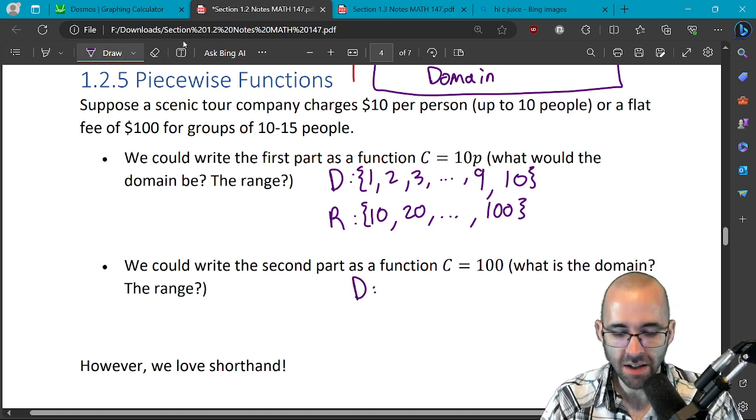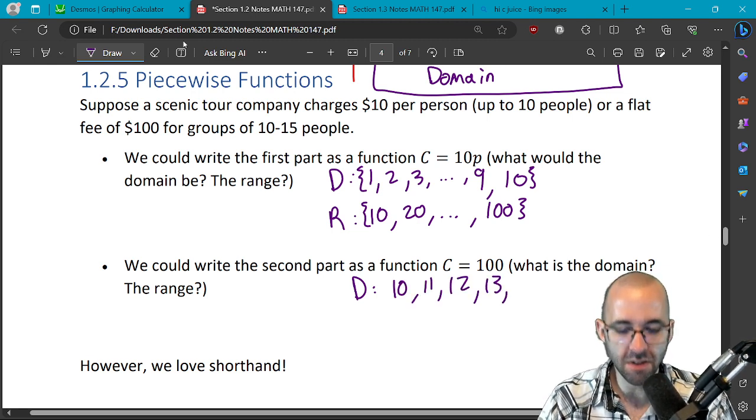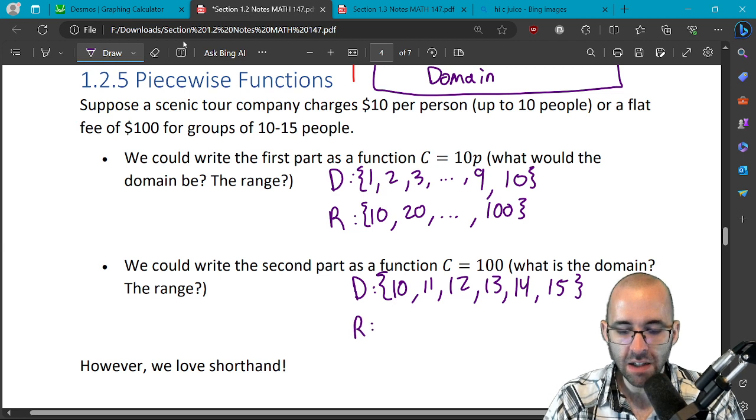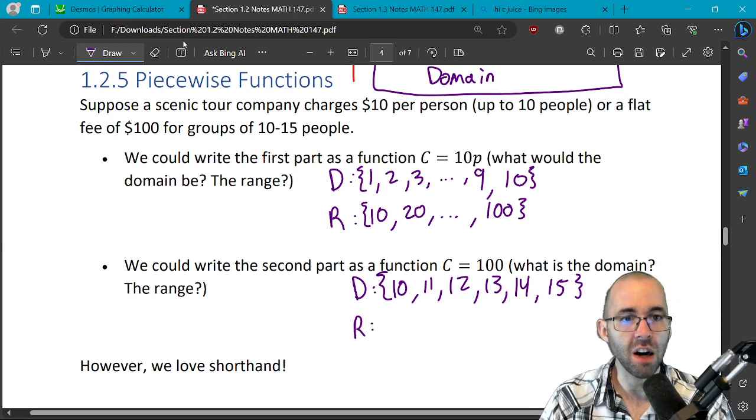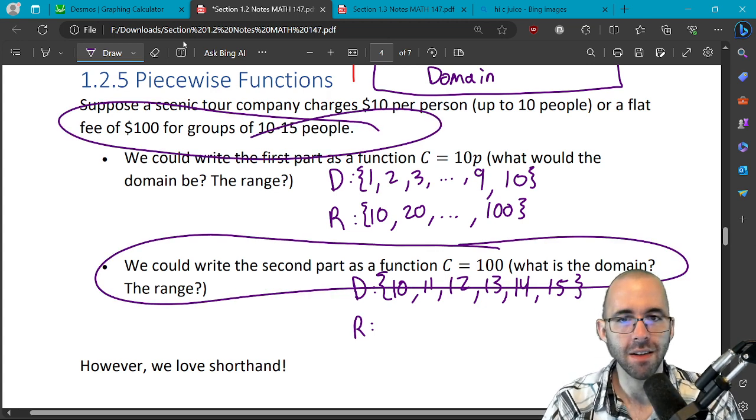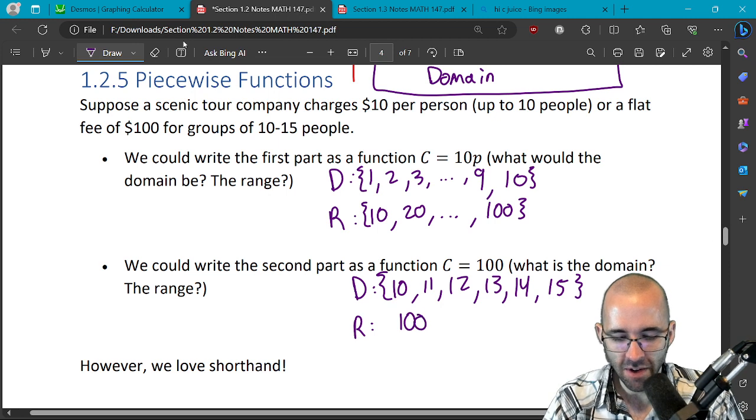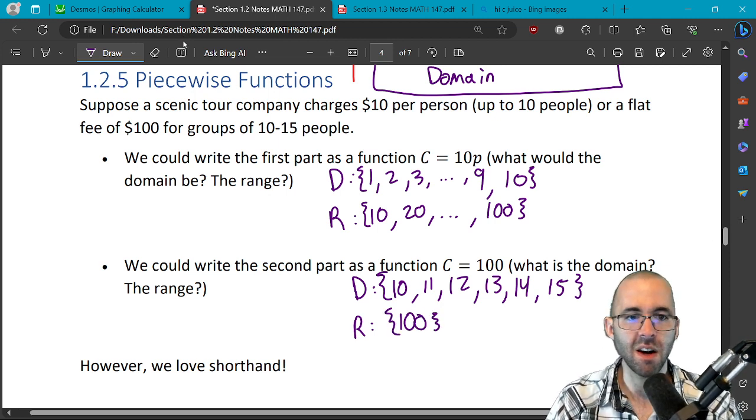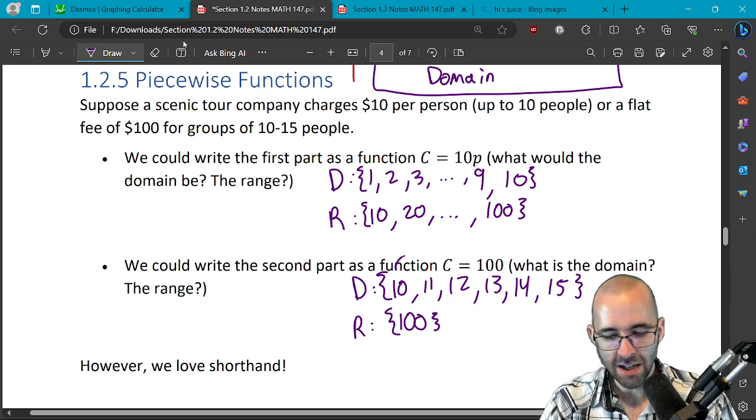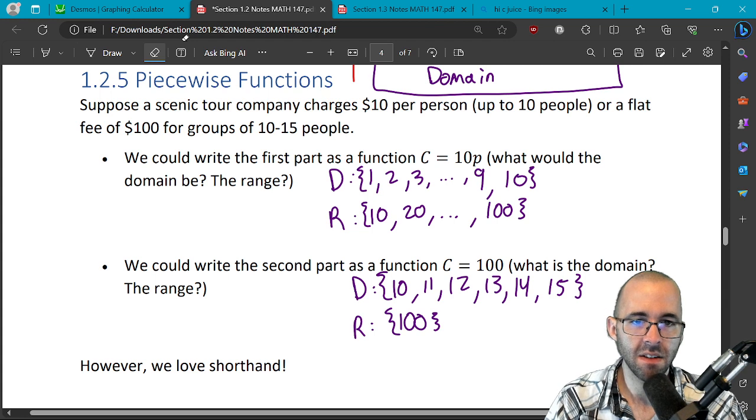So the domain here, that's going to be you can have ten people, eleven people, twelve people, thirteen people, fourteen or fifteen people. We'll add the braces. The range, what are the possible output values, what are the possible costs for the second part? Well if you're between ten and fifteen people, there's only one possible output: a hundred dollars. Anything in this set, any of these numbers, you're charging a hundred dollars flat fee.